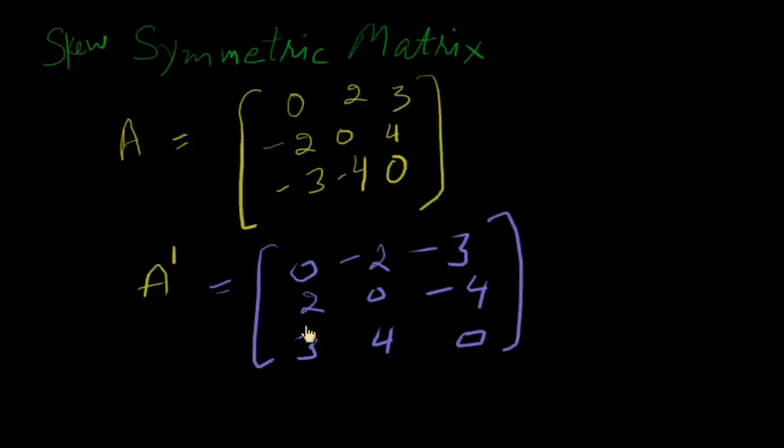Now see the difference in transpose of A. We are seeing A transpose is a negative of A because here is plus 2, here is minus 2, here is plus 2, here is plus 3, here is minus 3, here is minus 2, here is plus 2. So this transpose will be skew-symmetric matrix.